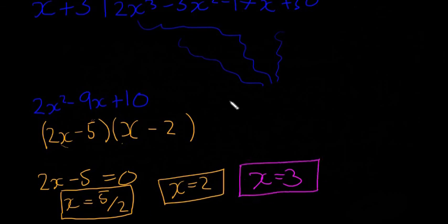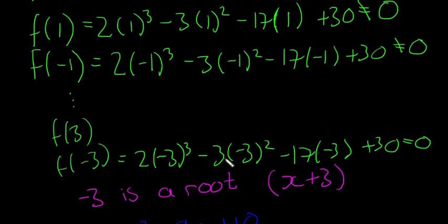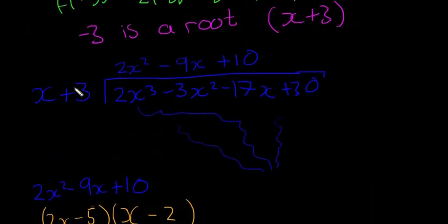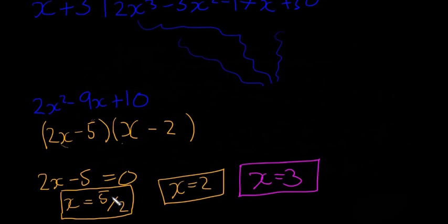So to recap: we had a cubic equation to solve and needed to find three roots — the three places where the curve hits the x-axis. First, use trial and error up to ±3 to find one root; here that was x = -3, giving factor (x + 3). Then use long division to divide that factor into the full polynomial, getting the quadratic 2x² - 9x + 10. Finally, factorize and solve the quadratic to find the remaining two roots.